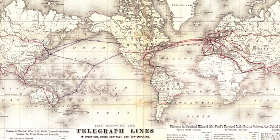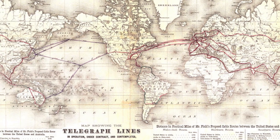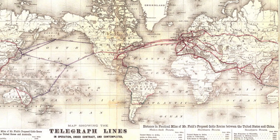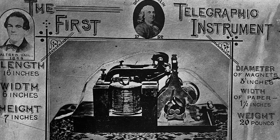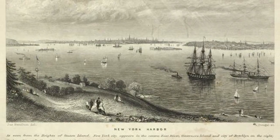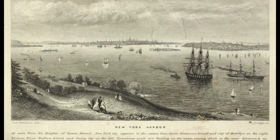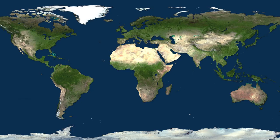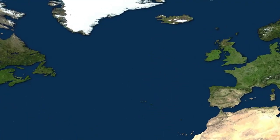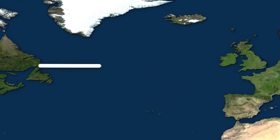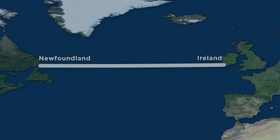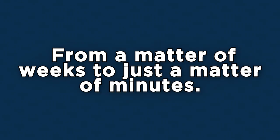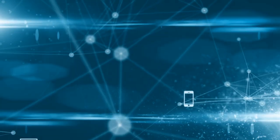Now you may be wondering when this vast network of undersea cables began. Surprisingly enough, the first undersea cable was laid over 177 years ago, all the way back in 1842, when Samuel Morse — the developer of Morse code and commercial telegraphy — decided to submerge a cable insulated with tarred hemp and India rubber in the waters of New York Harbor to run a telegraph through it. After a successful experiment, it wasn't long after in 1858 when the first transatlantic telegraph cable was laid between the United States and Great Britain, with endpoints in Newfoundland and Ireland, allowing transatlantic communication to go from a matter of weeks to just a matter of minutes.